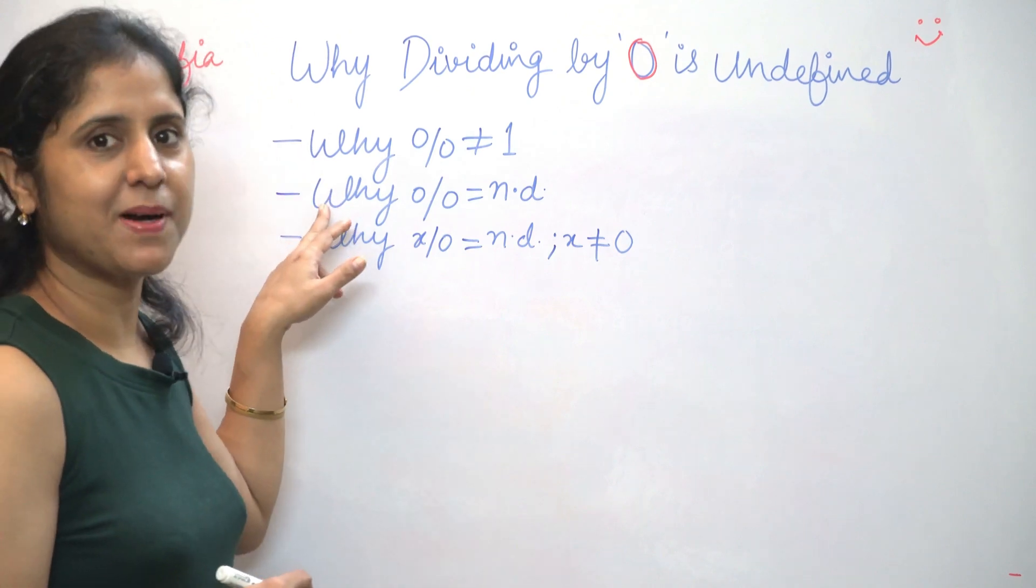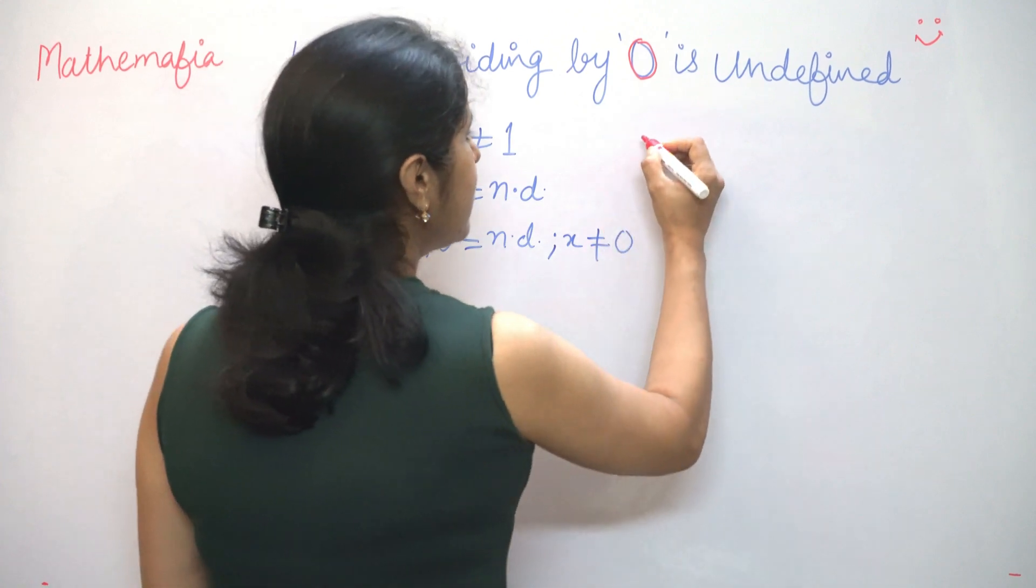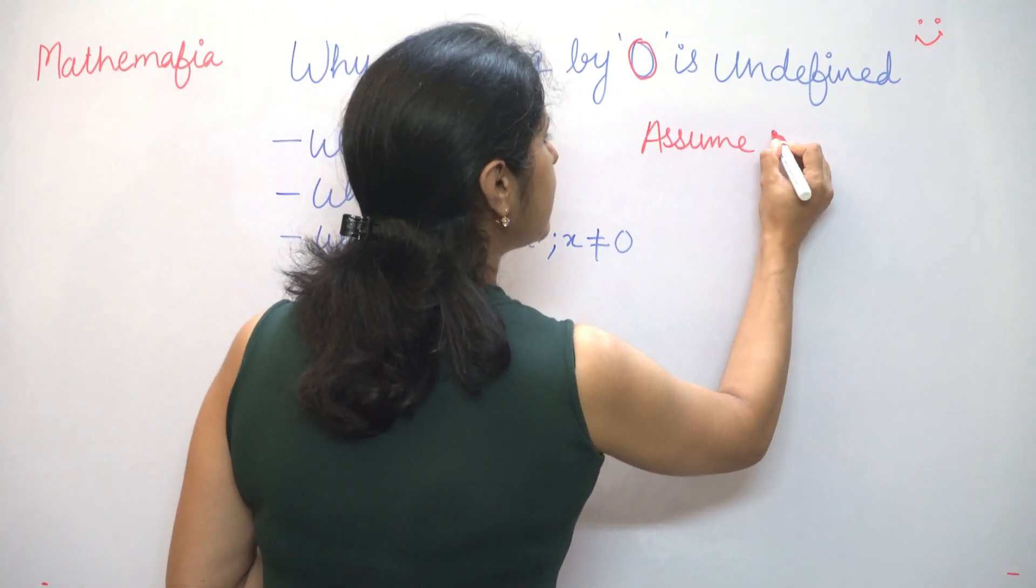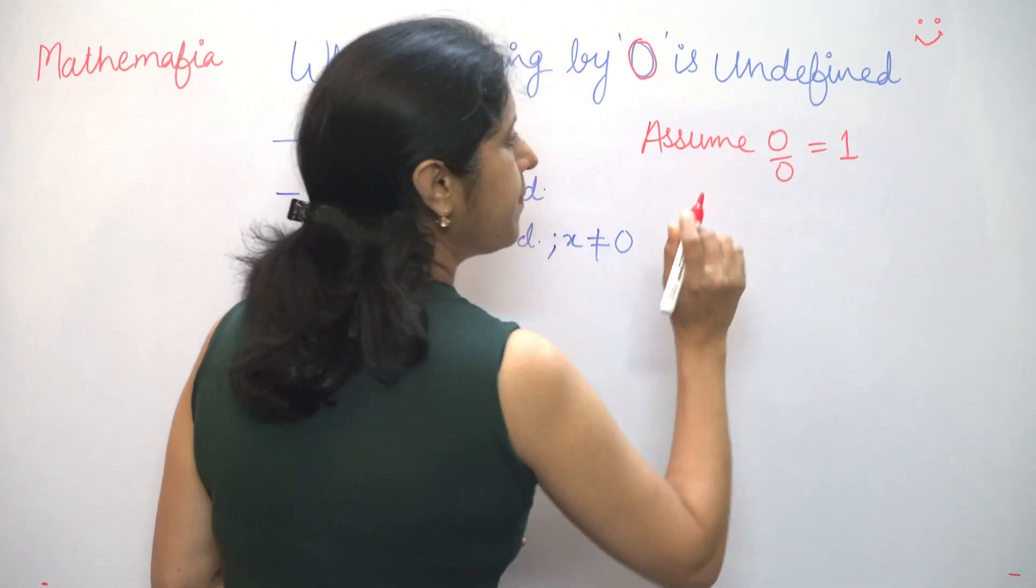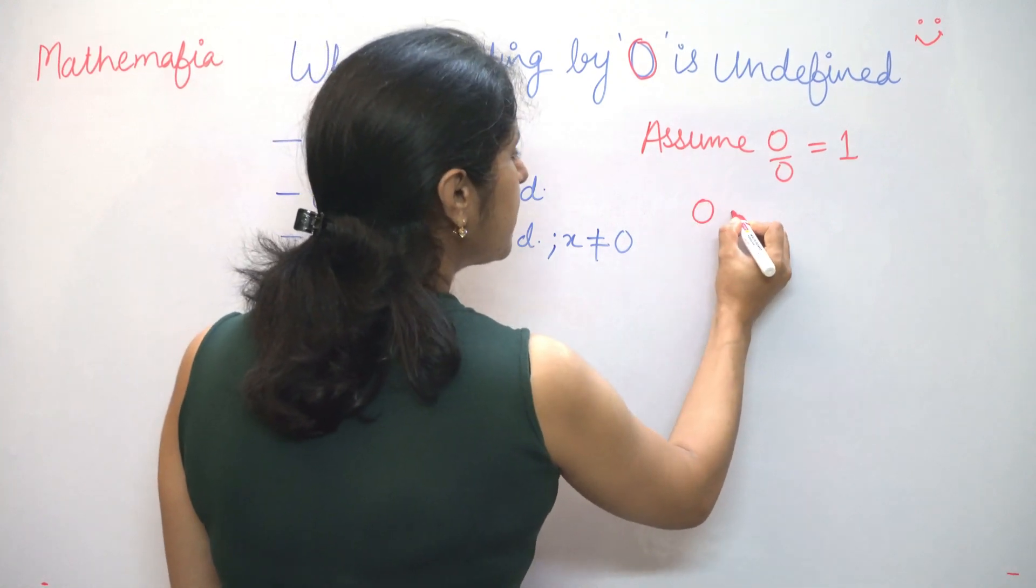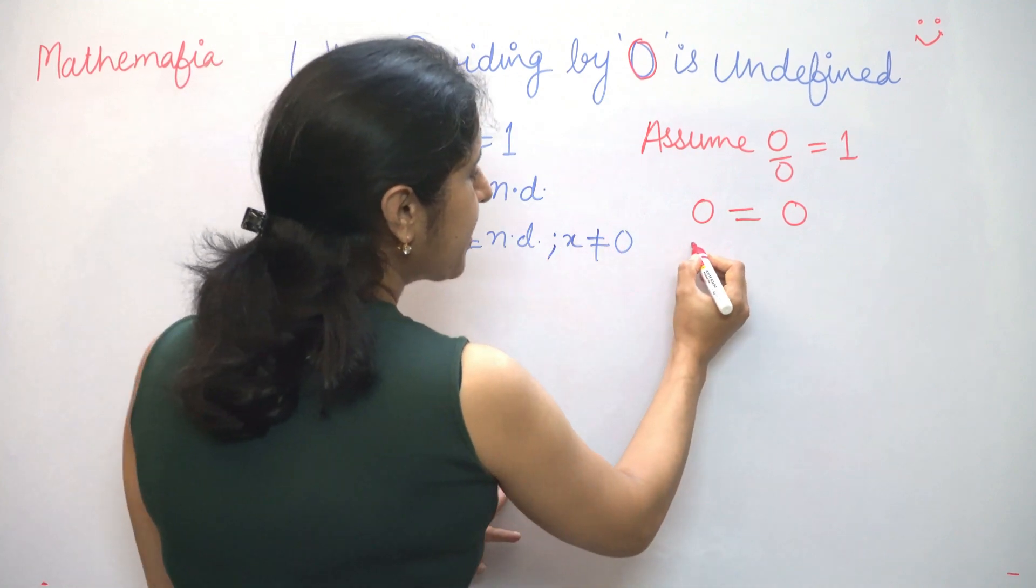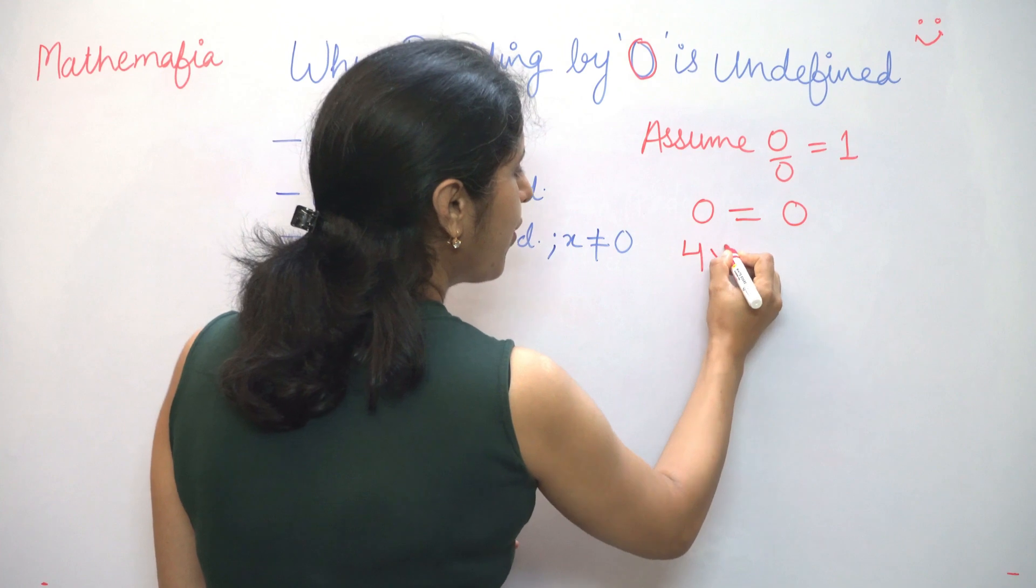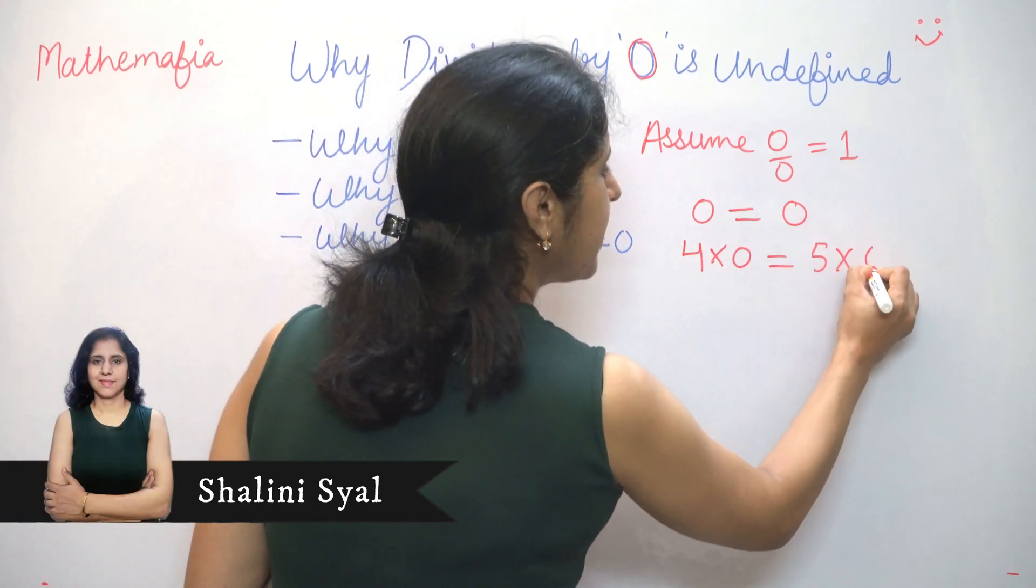Now we will talk about the first part and we will prove it by contradiction. We will assume that 0 by 0 is equal to 1. Now, we know that 0 is equal to 0, and if we multiply a number with 0, that also stays 0. So we can write that 4 into 0 is equal to 5 into 0. Doesn't make any difference.